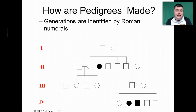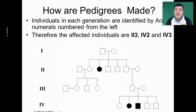Generations are indicated by using Roman numerals. This helps us to separate generations as we're talking — Roman numeral one refers to the first generation here, and Roman numeral four would be the most recent generation.